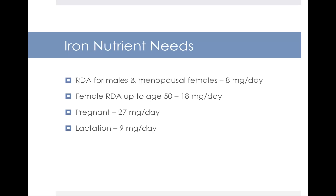What about iron nutrient needs? The RDA for males and menopausal females is 8 mg per day. The female RDA, however, up to age 50 is higher — that's 18 mg per day. This is due in large part to the fact that a woman who is menstruating is losing blood on a monthly basis and losing iron that way. Pregnancy iron needs increase by 50%, from 18 up to 27 mg, to compensate for the increasing volume of blood experienced during pregnancy. And then during breastfeeding, the needs go back down to 9 mg a day.